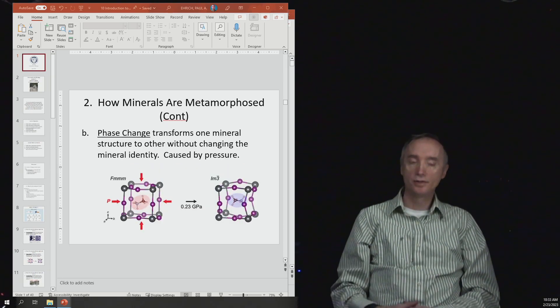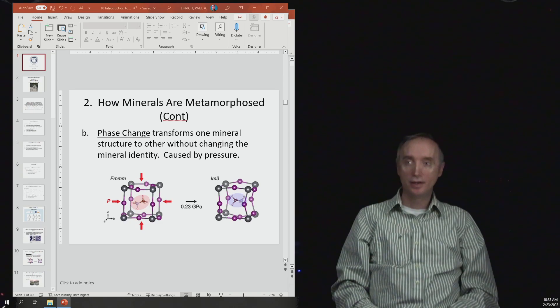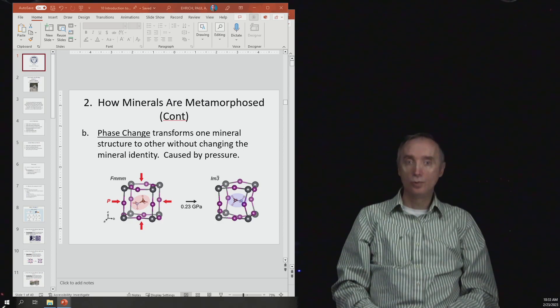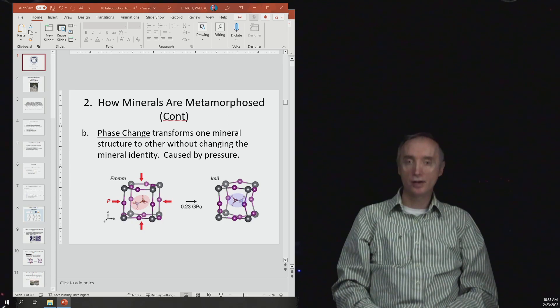The next kind is called a phase change. This transforms one mineral structure into another mineral structure without changing the mineral identity, and it's caused by pressure.